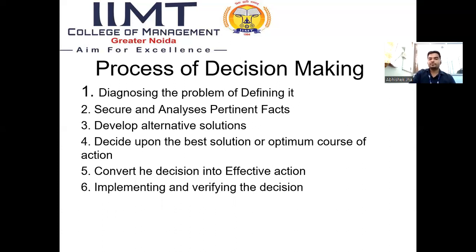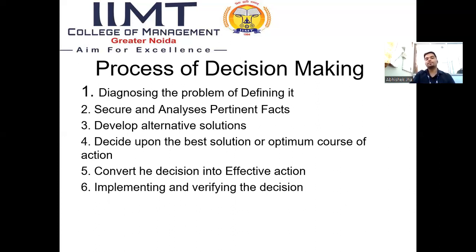The process of decision making: first, diagnosing the problem and defining it. Second, secure an analysis of coordinate factors. Third, development of alternative courses of action. Fourth, deciding upon the best solution or optimum course of action. Fifth, convert the decision into an effective decision, and implementing and verifying it.